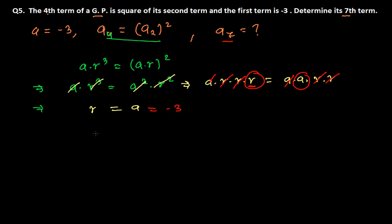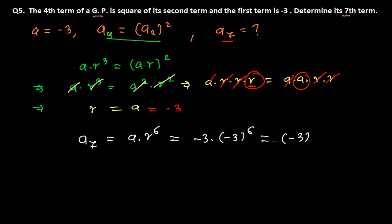Now we need to find the seventh term. The seventh term is a times r to the power 6. We know a is minus 3 and r is minus 3, so it becomes minus 3 times minus 3 to the power 6, which equals minus 3 to the power 7, since when the base is the same we add the exponents: x^n times x^m equals x^(n+m).